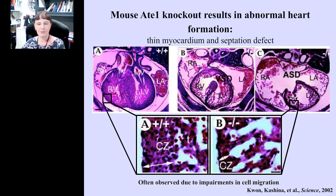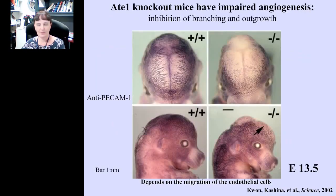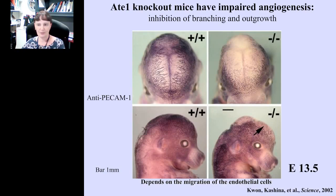These types of cardiac defects are typically observed in mouse models with impairments in cell migration, so we started thinking about cell migration early on when we saw these defects. Another defect in the ATE1 knockout embryos is in angiogenesis — the remodeling of the capillary network that forms the mature circulatory system. In this picture showing E13.5 mouse embryo heads stained with an antibody revealing blood vessels, you can see a very well-developed capillary network on top of the wild-type head. In the knockout embryos, the top of the head appears bald — blood vessels don't grow well into areas where they're supposed to grow, a process that begins with migration of endothelial cells.